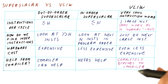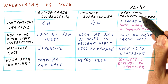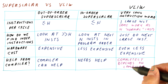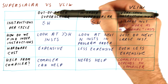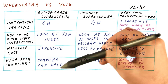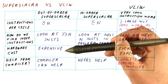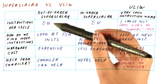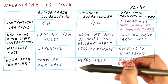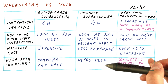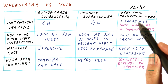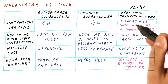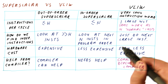Finally, a VLIW processor completely depends on the compiler to produce performance. Without a good compiler, a VLIW processor will fail miserably. So among these three: the out-of-order superscalar processor is hardware-intensive and needs little help, but sacrifices hardware cost. The in-order superscalar processor reduces hardware cost but needs compiler help for good performance. The VLIW processor goes to the extreme of completely depending on the compiler to express the parallelism needed, but in exchange gives us much lower cost.